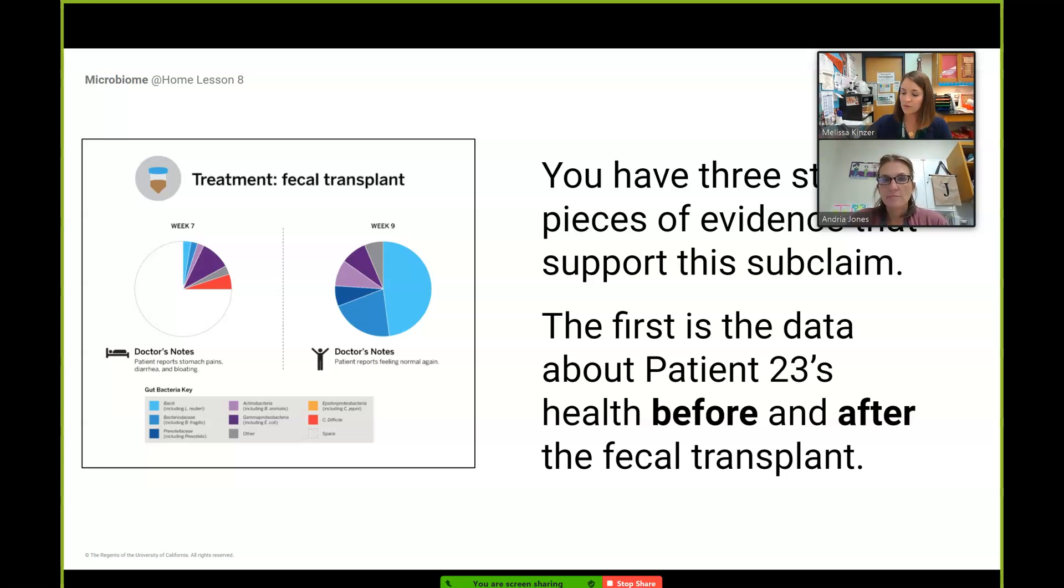When we were looking at our reasoning tool, we had a couple of items already listed underneath the evidence column. The data with the pie charts is an example of the evidence from patient 23's case study from week 7 to week 9. We can use this graphic to help explain why bacteria from fecal transplant can fill up the space in the gut limiting food and space for invading harmful bacteria.